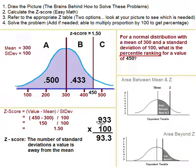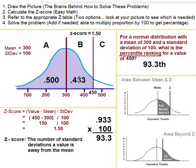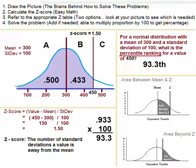0.933 multiplied by 100 gives 93.3. So the percentile ranking is 93.3. To summarize: for a normal distribution with mean 300 and standard deviation 100, the percentile ranking for a value of 450 is 93.3 percentile. We added 0.500 plus 0.433 to get 0.933, then multiplied by 100. That's a good stopping point — another video can be added if more content is beneficial.